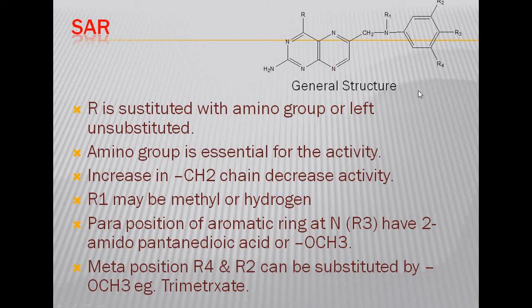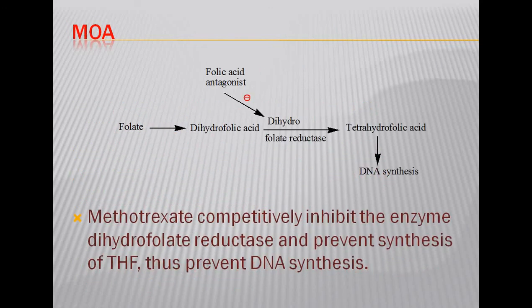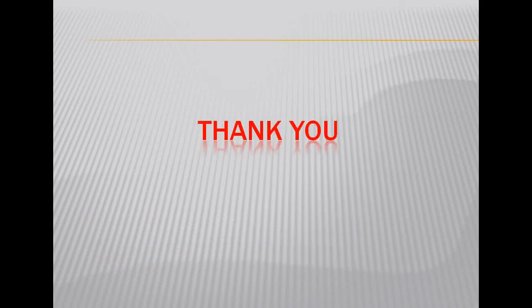Folate obtained from the diet or intestinal flora is converted into dihydrofolic acid and then tetrahydrofolic acid in the presence of the enzyme dihydrofolate reductase. All folic acid analogues inhibit dihydrofolate reductase, preventing the synthesis of tetrahydrofolate and thus blocking DNA synthesis. This is the mechanism of action of folic acid analogues.